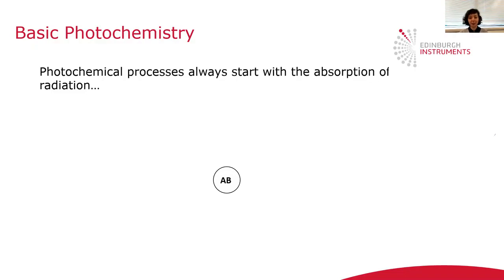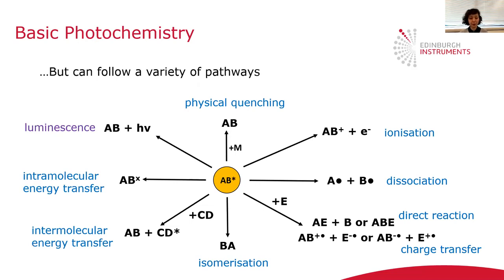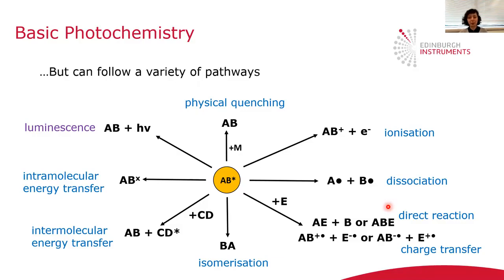Let's see what happens in a typical photochemistry experiment. Let's imagine that we have a molecule AB and we irradiate it. A photochemical process will always start with the absorption of radiation and the excitation of our material of interest. But from this excited molecule, it can proceed through many different pathways — the photoexcited molecule AB can relax emitting radiation, or it can relax through a non-emissive pathway such as quenching. It can ionize, it can dissociate, it can react with other species.